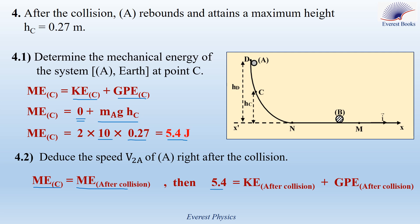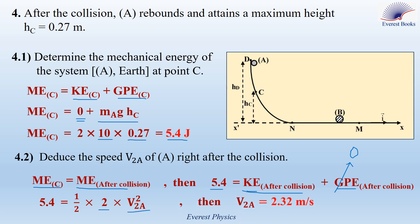Part 4.2: Deduce the speed V2A of object A right after the collision. We apply the principle of conservation of mechanical energy. The mechanical energy at C equals the mechanical energy right after the collision, which is 5.4 joules. After the collision, the collision takes place on the horizontal track NM, which belongs to the reference level, so gravitational potential energy equals zero. The mechanical energy equals the kinetic energy, which equals one half × M × V2A². With mass equal to 2 kg, V2A is equal to 2.32 meters per second.